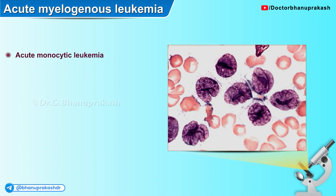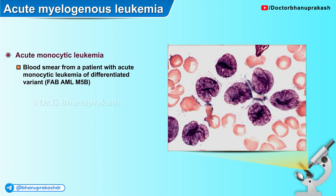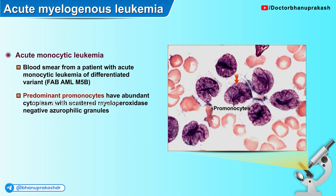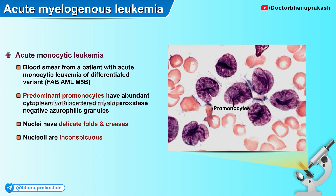Here is another histopathological blood smear from a patient with acute monocytic leukemia of a differentiated variant. The predominant promonocytes have abundant cytoplasm with scattered myeloperoxidase-negative azurophilic granules. The nuclei have delicate folds and creases, and the nucleoli are quite inconspicuous.